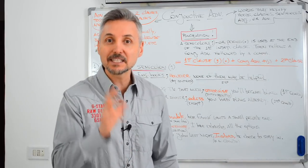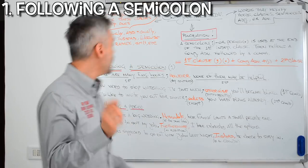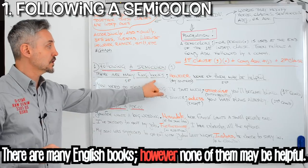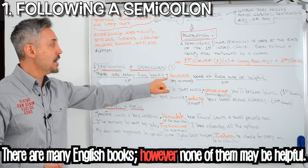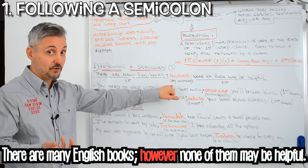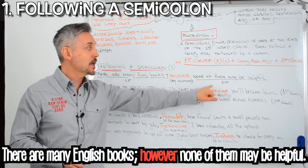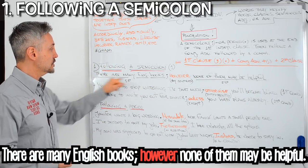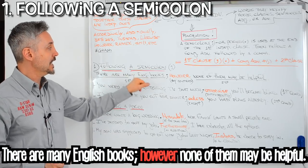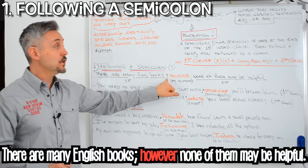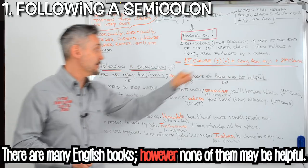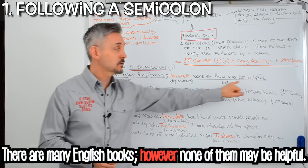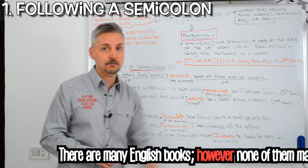So let's list some examples. First one, following a semicolon: 'There are many English books; however, none of them may be helpful.' So you can see the first clause — 'There are many English books' — then the conjunctive adverb 'however', which means 'by contrast', and then the second clause: 'None of them may be helpful.'